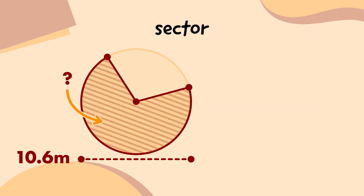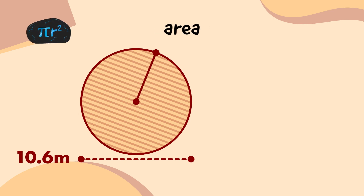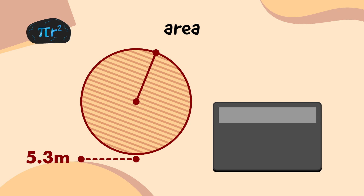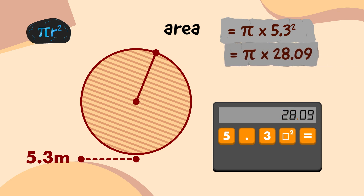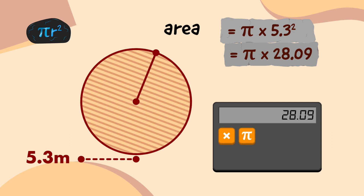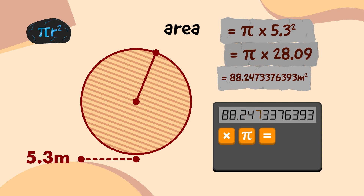Next, I'll work out the area of the sector that the vines cover. So I'll work out the area of the whole emblem first. The radius of this circle is 5.3 metres. So on my calculator, I'm going to start by doing the radius squared — I'll type 5.3, press the square button, and press the equals button, which gives me 28.09. Then, I'm going to multiply 28.09 by pi, which tells me that the area of the third emblem circle is 88.2473376393 square metres.